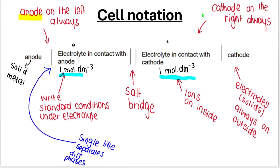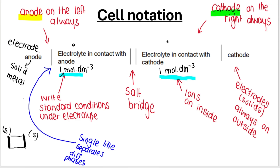Your solid metal electrode is always on the outsides. Think of it like building a house — the outer walls on the far ends are the solids, your electrodes. Then on the inside, between your salt bridge and your solid on each side, we have the electrolyte.